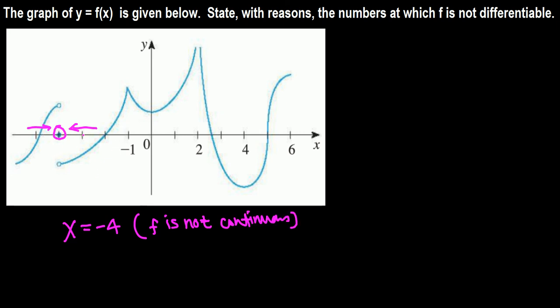Moving on, everything is fine and continuous here, but there is a corner point. That means the function is not differentiable. Even though the function is continuous, due to this corner point it's not differentiable. So x equals negative 1 — corner point.